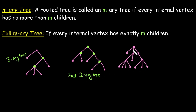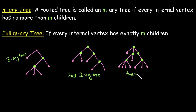In the third case, the first internal vertex — the root — contains 3 children. This internal vertex has 2 children. For this internal vertex, we have 3 children. For this, we have only 1 child. For this case, we have 4 children, so we call it a 4-ary tree. Now is this a full 4-ary tree? No, because not every internal vertex has exactly 4 children.